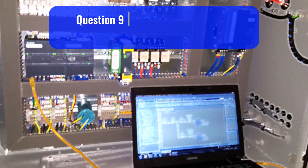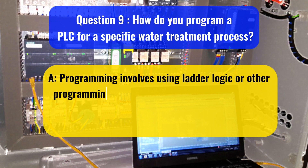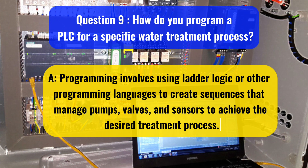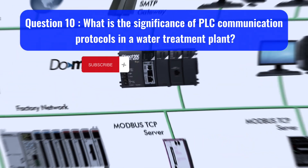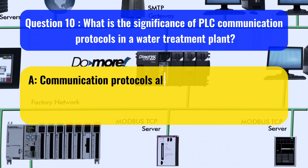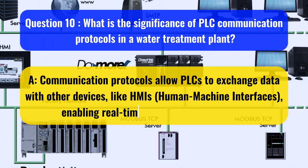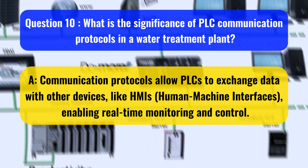Question 9: How do you program a PLC for a specific water treatment process? Programming involves using ladder logic or other programming languages to create sequences that manage pumps, valves, and sensors to achieve the desired treatment process. Question 10: What is the significance of PLC communication protocols in a water treatment plant? Communication protocols allow PLCs to exchange data with other devices, like HMIs (human-machine interfaces), enabling real-time monitoring and control.